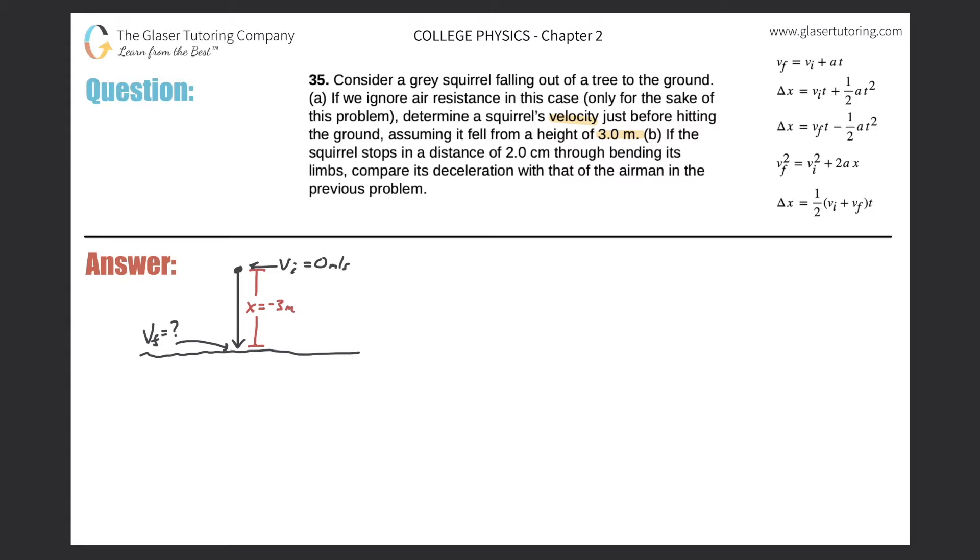We also know that in addition, because this is a free-fall problem, the acceleration due to gravity is always going to be negative 9.80 meters per second squared. Do we have enough information to solve the problem? We need to look for a formula that relates the final velocity, the initial velocity, the acceleration, and displacement. If we go over to the right-hand side, it looks like the fourth formula here will work out nicely.